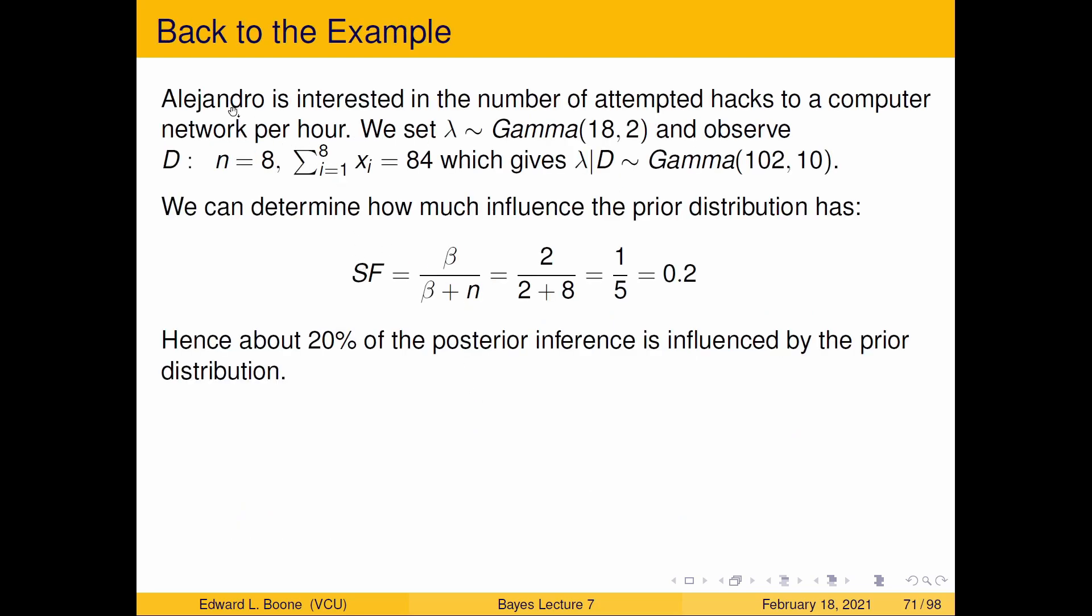So here, let's go back to our example with the number of computer attacks per hour. With Alejandro, we had set λ as Gamma(18, 2) and observed eight observations with the sum of Xᵢ equal to 84. This gives us λ given the data is Gamma(102, 10). And here we take β is 2, n is 8, and we end up with 2 over 2 + 8, which is one-fifth or about 0.2. So about 20% of the posterior mean is influenced by the prior distribution.